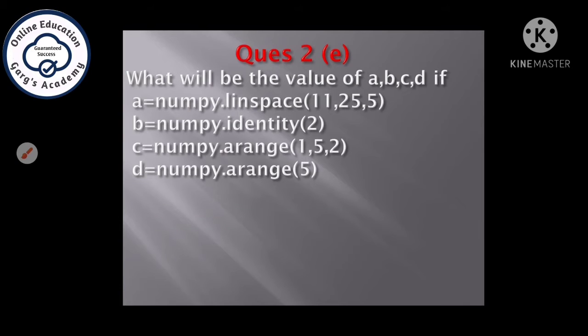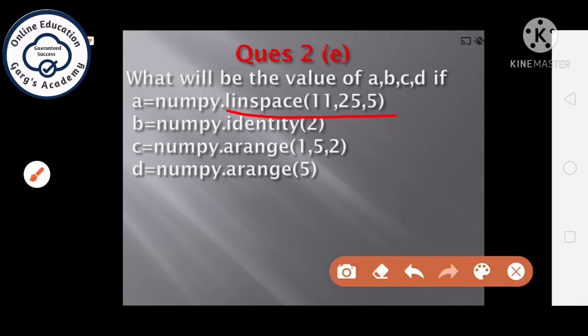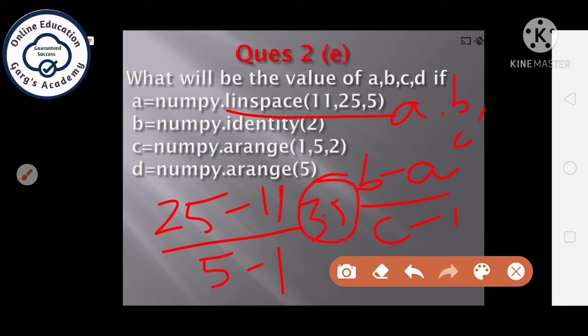Next, what will be the value of a, b, c, d if these are the 4 statements which are creating 4 different arrays using different functions and with different arguments. So in the first function, we have used linspace function with 3 arguments 11, 25, 5. First of all, let's see how this function works. These are the 3 arguments, a, b and c and how it will calculate the linear difference, d minus a upon c minus 1. So 25 minus 11 upon c minus 1, that is 5 minus 1, it will come out to be 3.5.